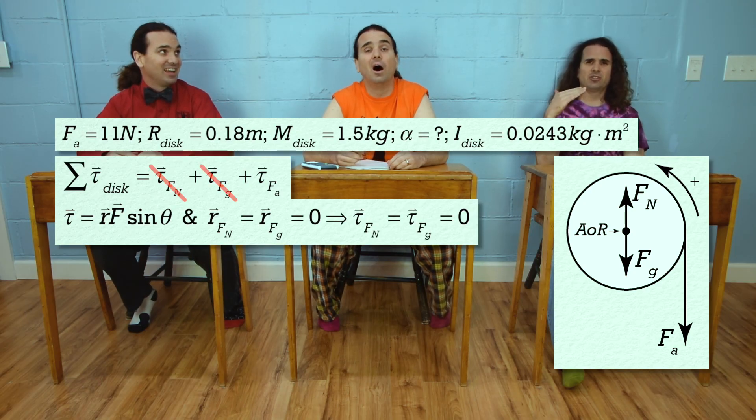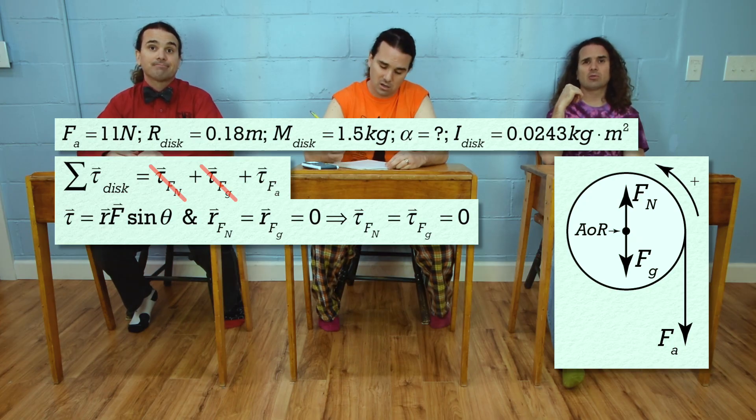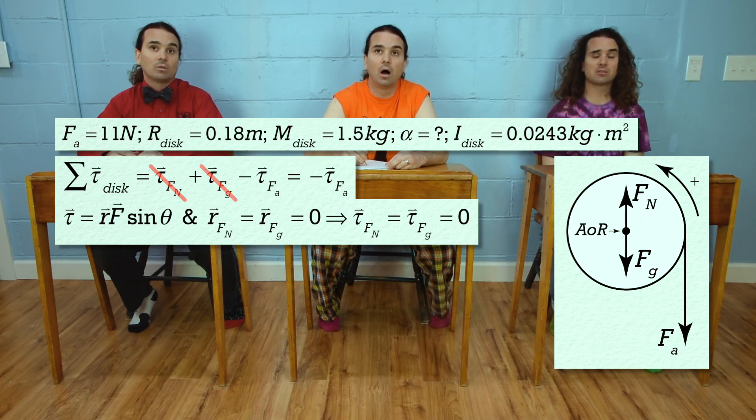And the direction of the torque caused by the force applied is actually opposite the positive torque direction. It is clockwise or into the board. So, the net torque should equal just the negative of the torque caused by the force applied.